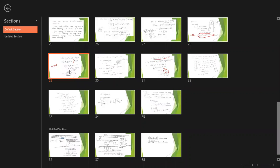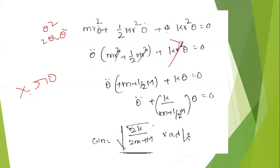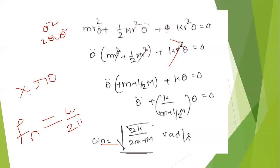The equation becomes: θ̈ + [K / (M + M/2)]·θ = 0. This gives the natural frequency. The natural frequency equation: ωₙ² = K / (M + M/2). Taking fn, the natural frequency in Hz is fn = (1/2π)·√[K / (M + M/2)]. This is the actual equation of the problem.